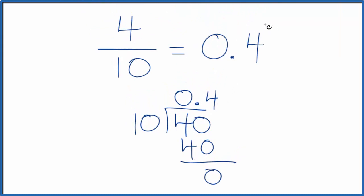If you want to check your work, you can take the answer, the 0.4, multiply that by the denominator, the 10, and you should get the numerator, 4.